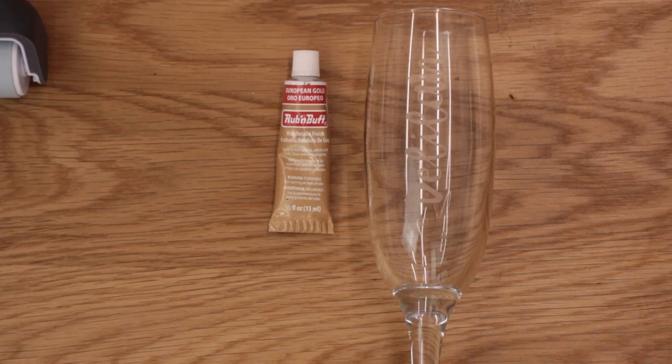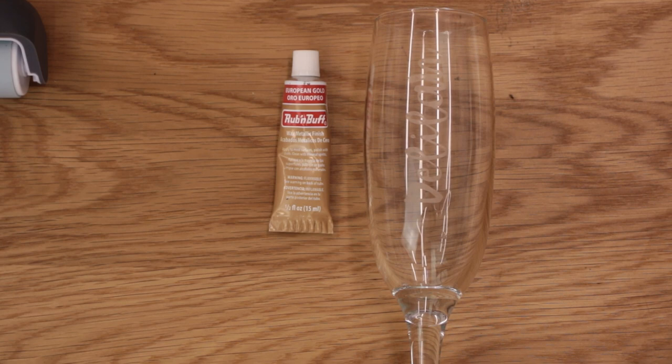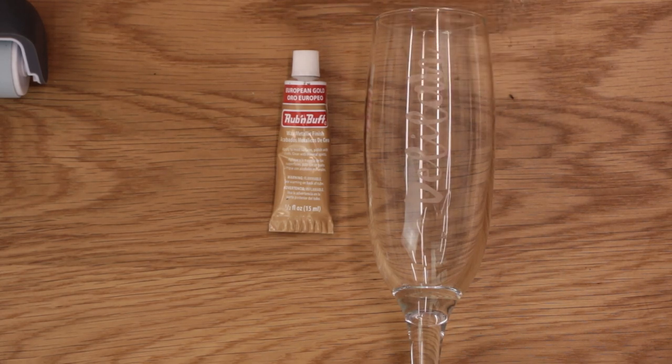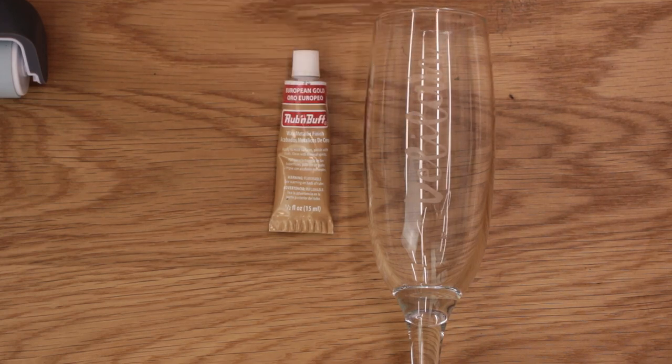We're going to use Rub and Buff on the glass and then for the slate you can only use the alcohol inks with the slate etching. Unfortunately the Rub and Buff doesn't work on the slate because it sinks into the slate rather than disperses and sticks to the etching like it does on the glass.